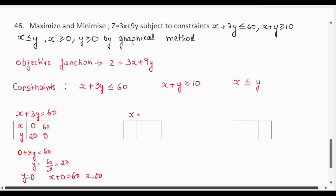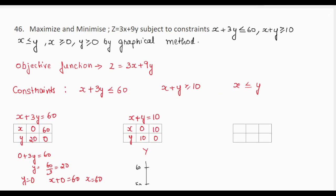Similarly, consider the second constraint as x + y = 10. When x = 0, y = 10, and when y = 0, x = 10. For the third equation x = y: when x = 0, y = 0; when x = 10, y = 10; and when x = 20, y = 20.